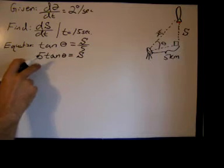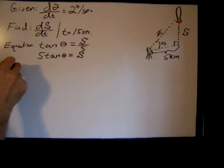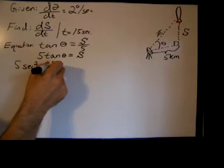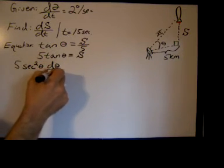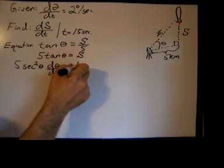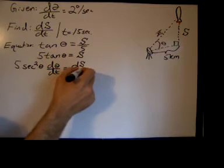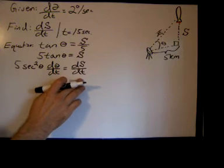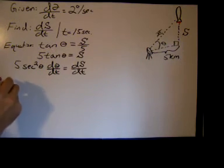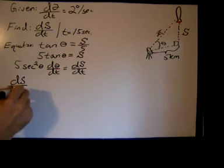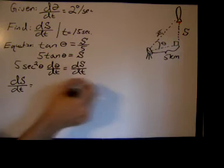So the derivative of five tangent theta with respect to t is five secant squared theta d theta dt, and the derivative of s with respect to t is just ds dt. We've actually already got this equation solved for what we want - it's ds dt, and I'm going to start writing it over here.